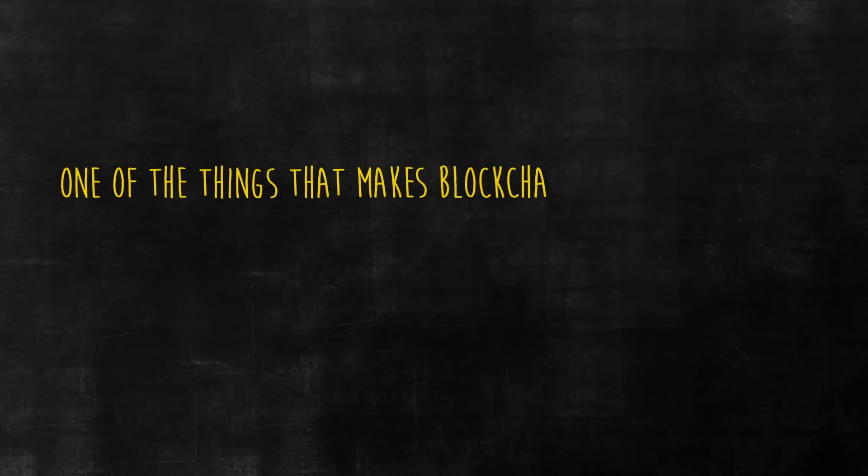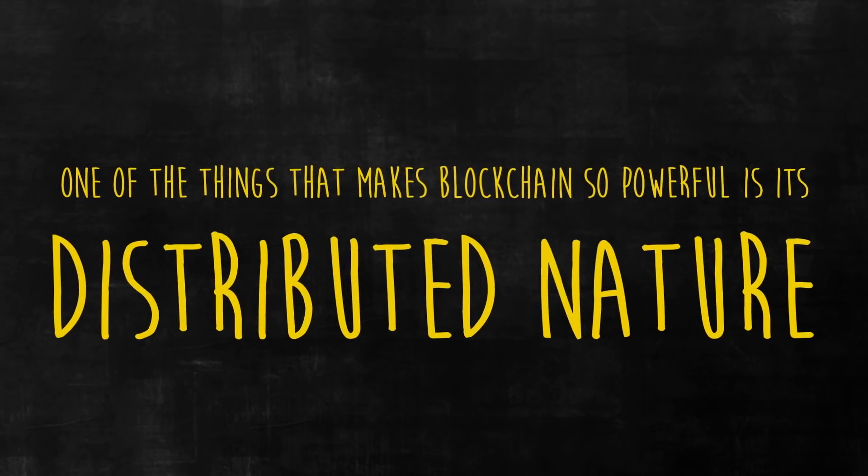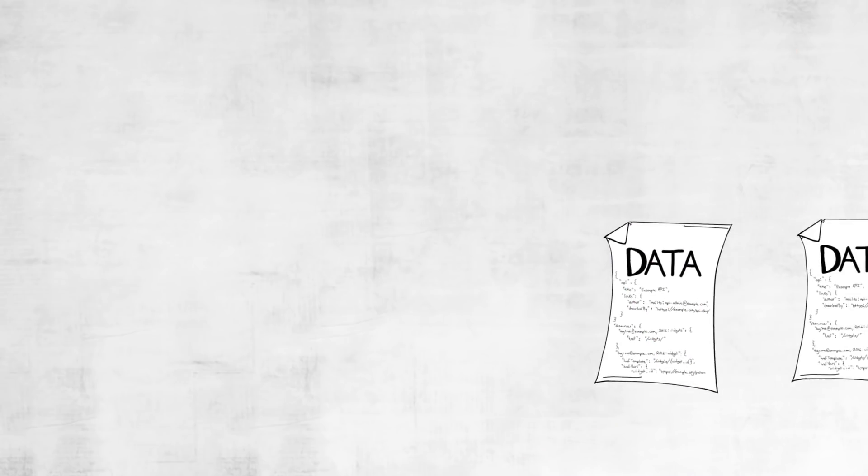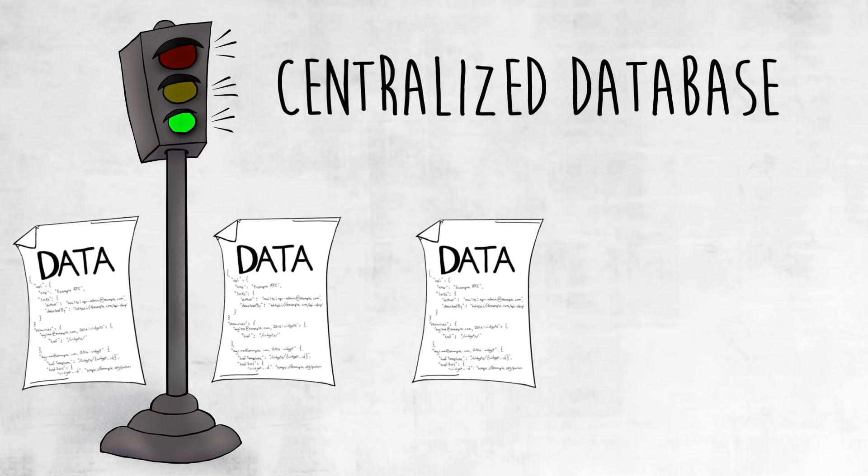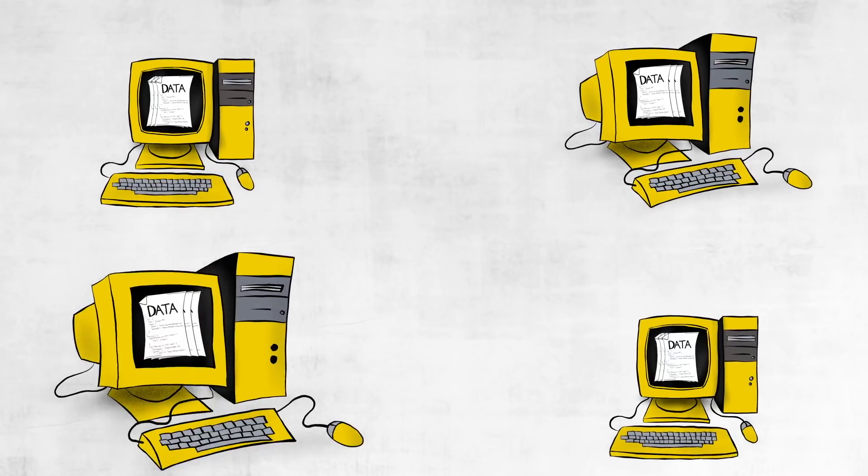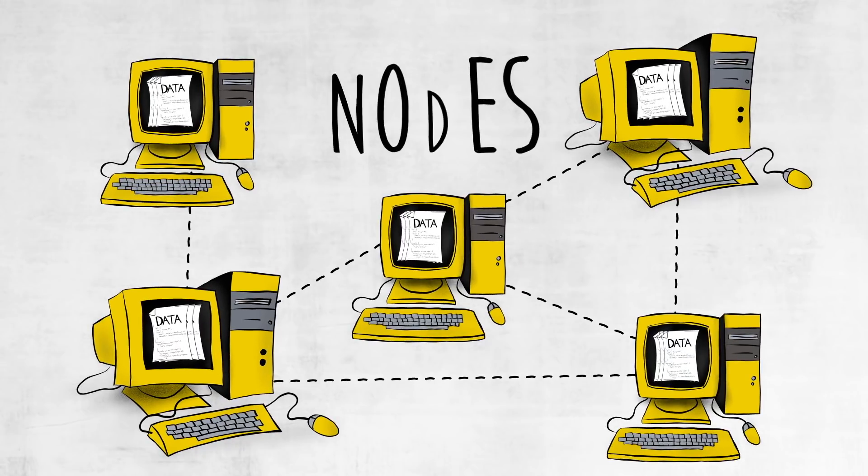One of the things that makes blockchain so powerful is its distributed nature. Distributed, in this case, means that data isn't just stored in one centralized database, controlled by a single account or administrator, but across a wide-ranging network of computers called nodes.